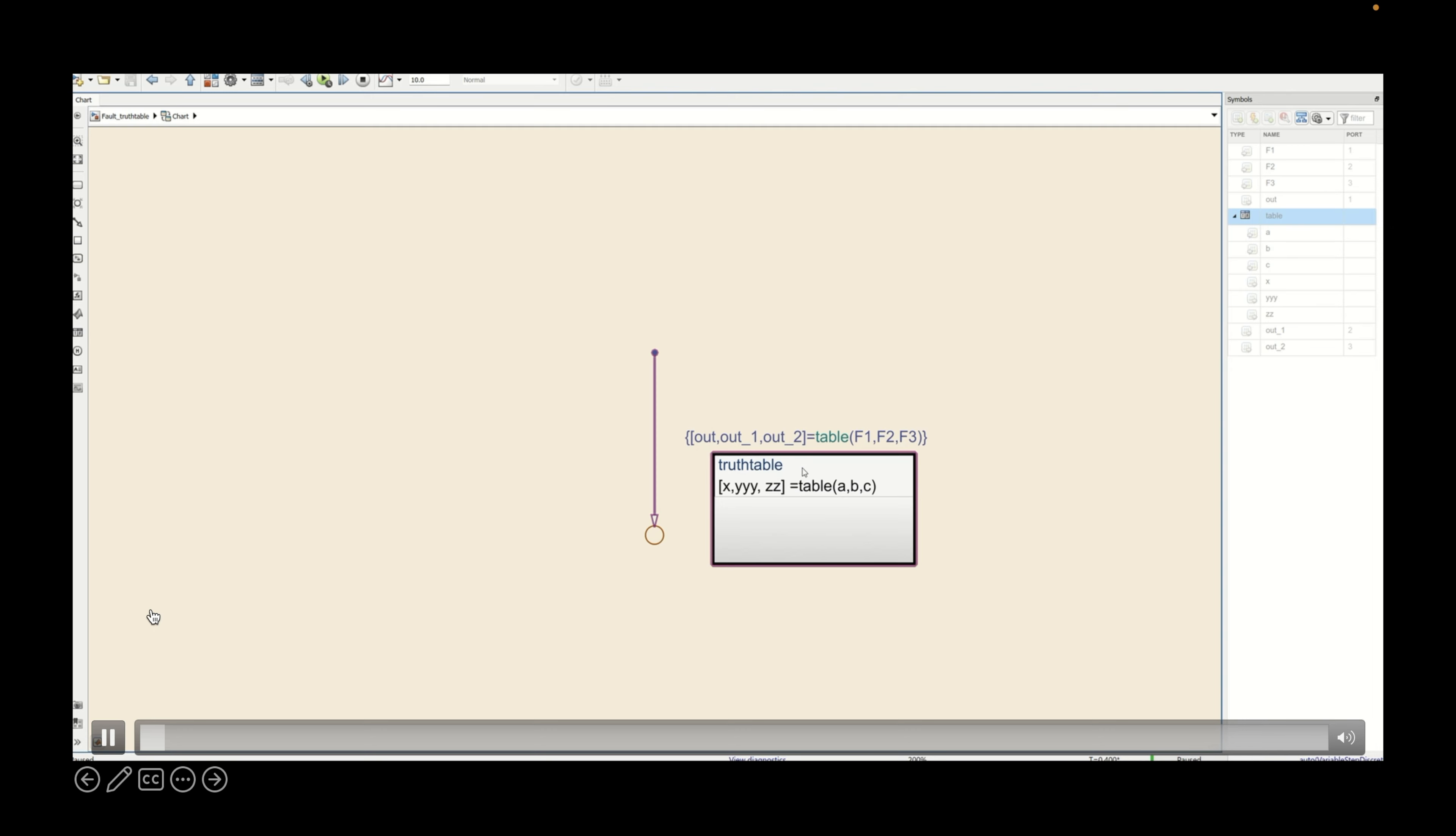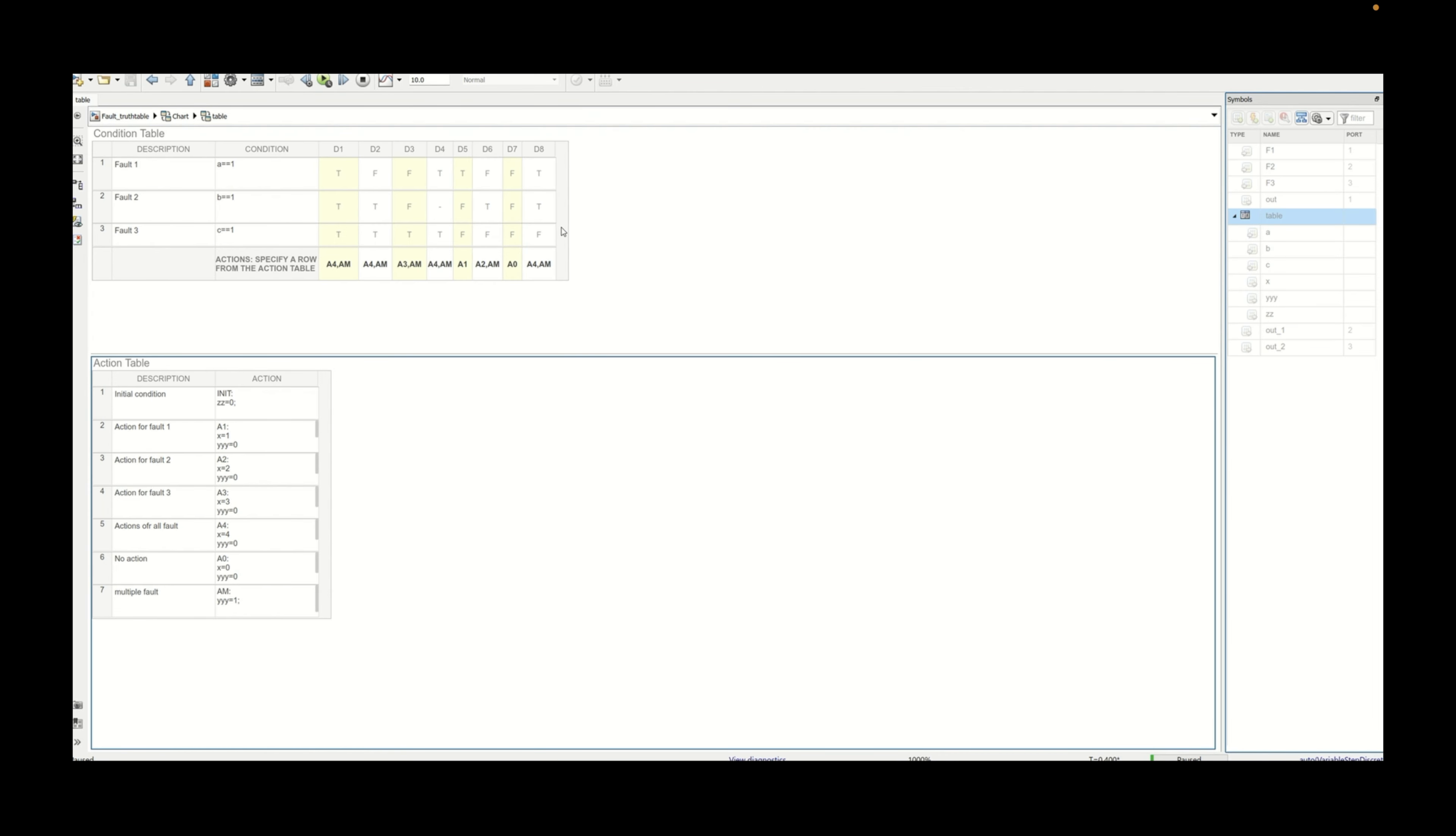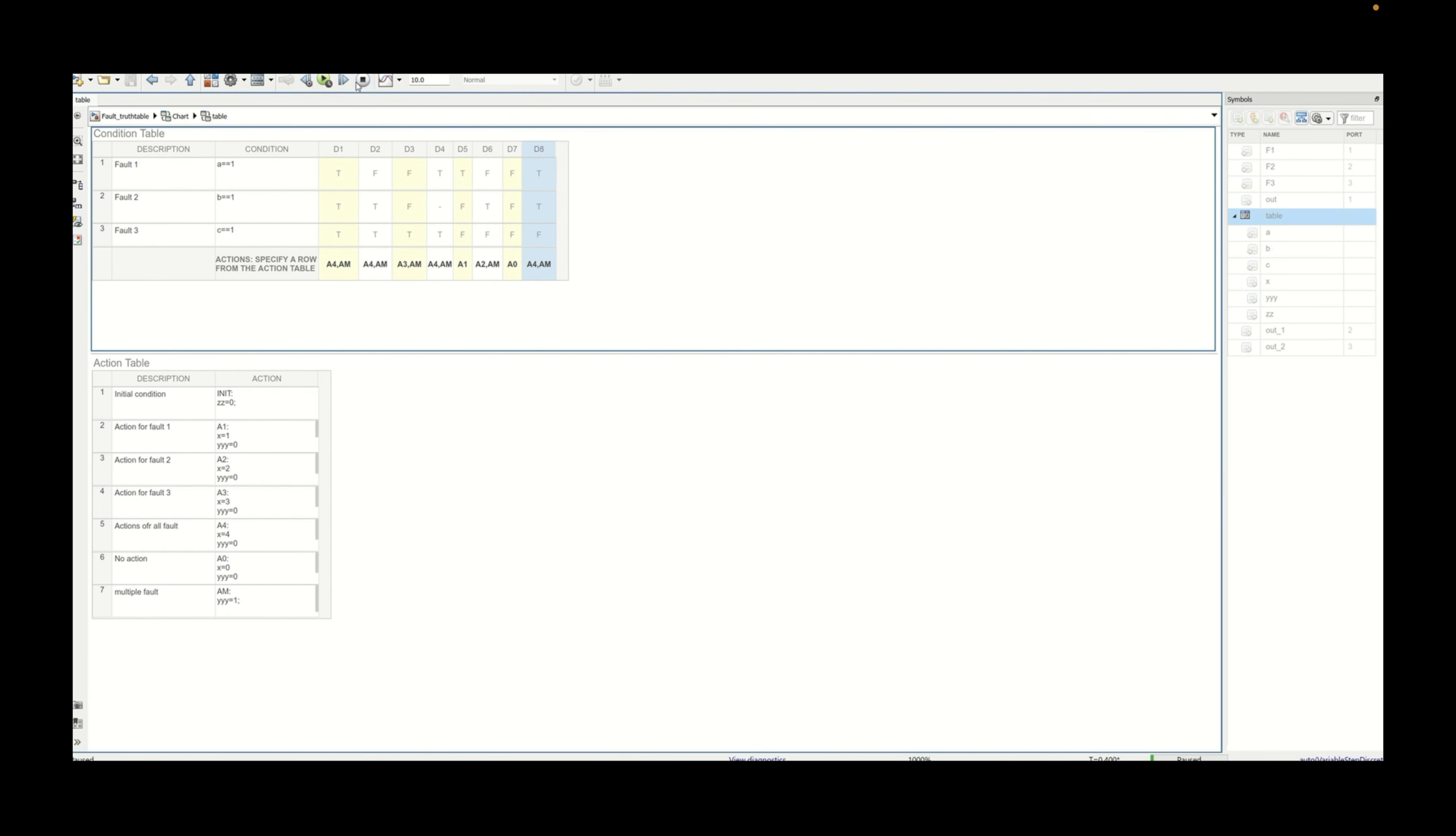So this is the truth table that we already have implemented and we have all these things ready. Now suppose if you add a particular column which is a repetition of some other column, then your truth table in MATLAB or state flow will be able to detect that and you will be able to do the correction.